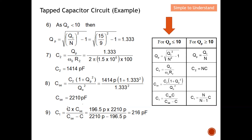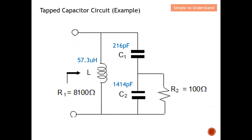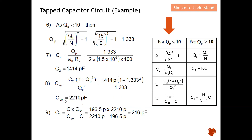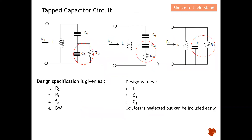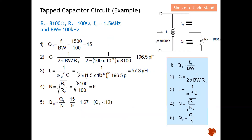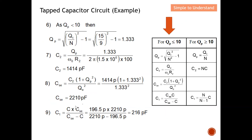Finally, C1 can be calculated from CSE using the series capacitor equation, giving C1 = 216 picofarads. To summarize, all the components for the tapped capacitor circuit have been found: C1 = 216 pF, C2 = 1414 pF, and L = 57.3 μH. Note that CSE is the series equivalent of C2 and the load resistance, and since C1 and CSE are in series, the series formula is applied to find C1.